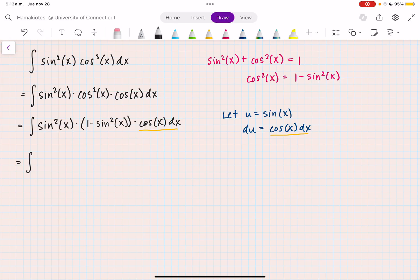I have the integral of sine squared, so that's u squared times one minus sine squared, which is u squared. And then cosine of x dx is just du.